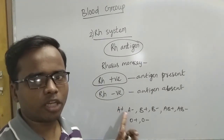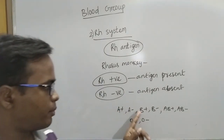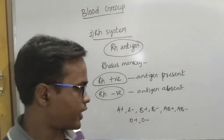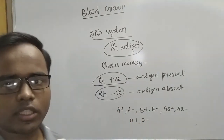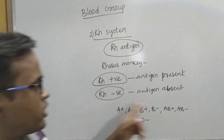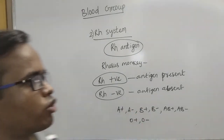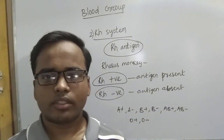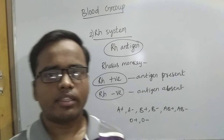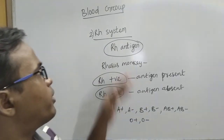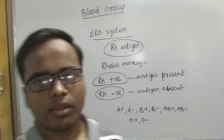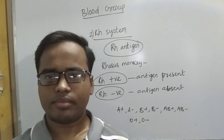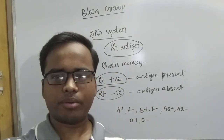The various blood group types are: A positive, A negative, B positive, B negative, AB positive, AB negative, O positive, and O negative. These are all about the blood group system. Thank you.